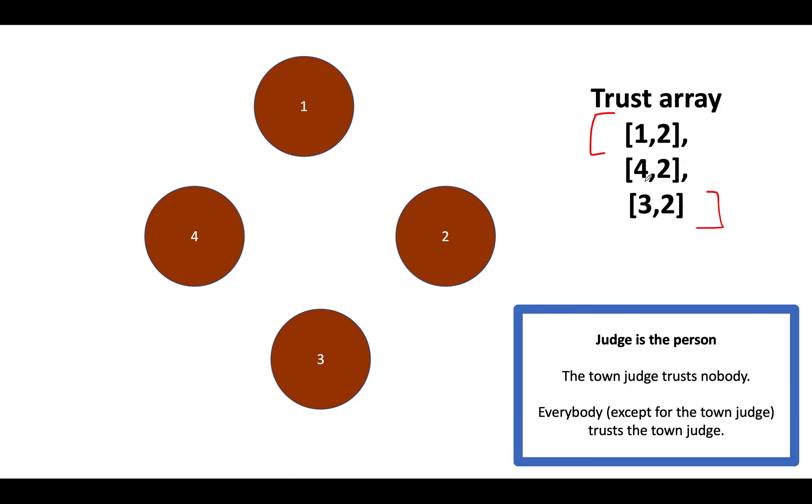The first element is 1, 2. The second element is 4, 2. And the third element is 3, 2. Also, I have written the definition of judge here. The first attribute is the town judge trusts nobody. And all the people in the town trust the judge except the judge itself. Let's get started. Let's iterate through this entire array and let's try to build the graphical representation of this trust array.